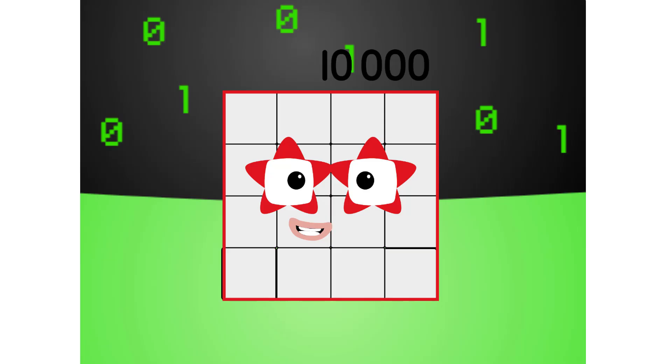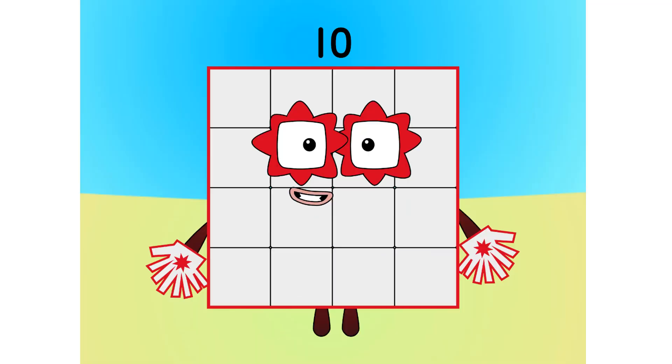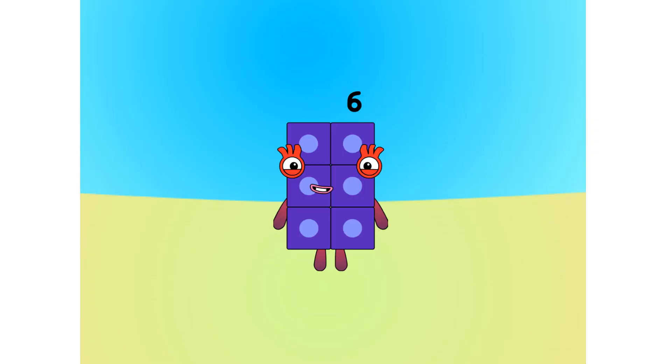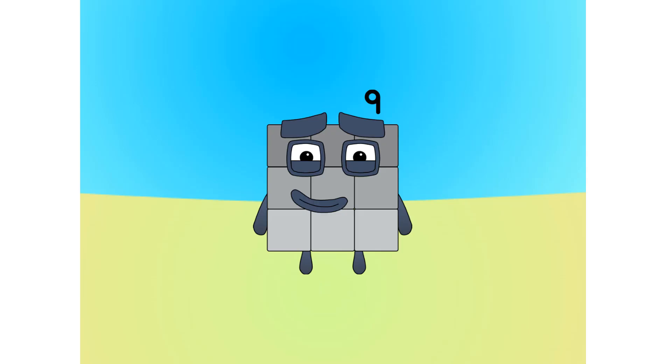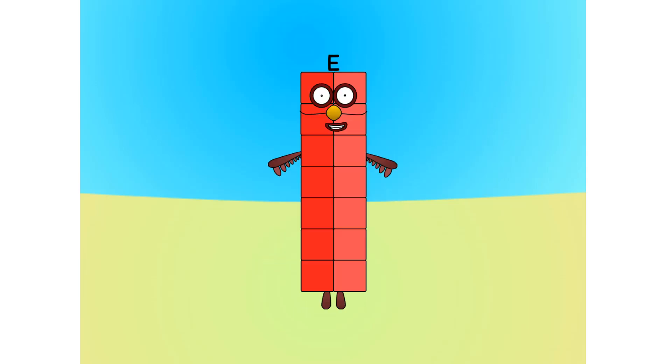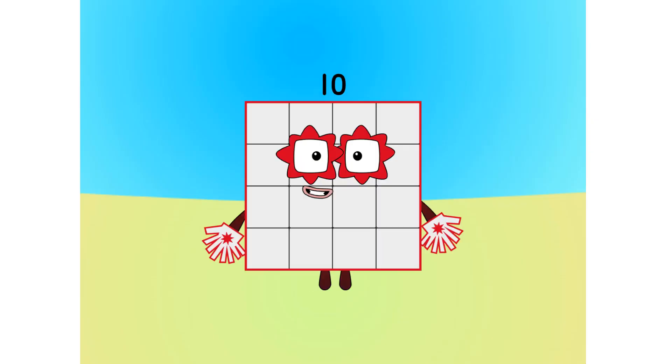Let's move on to the next base. This is base 16, also known as hexadecimal or hex. If this is base 16, there needs to be 16 digits. 1, 2, 3, 4, 5, 6, 7, 8, 9, A, B, C, D, E, F, 1, 0.